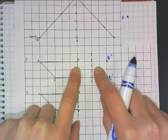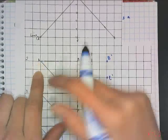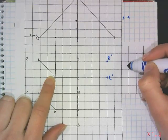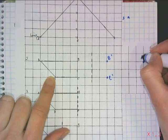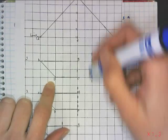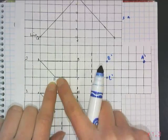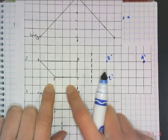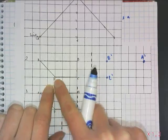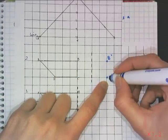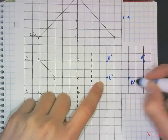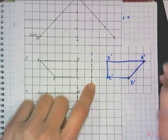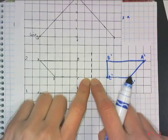Same thing for C — now it's on the opposite side of the line of reflection, but the same distance. Another approach: see how far D was from C, then take the opposite. It was 3 to the left of C, so now it'll be 3 to the right of C. The reflected image is the same distance from the line of reflection, but on the opposite side.